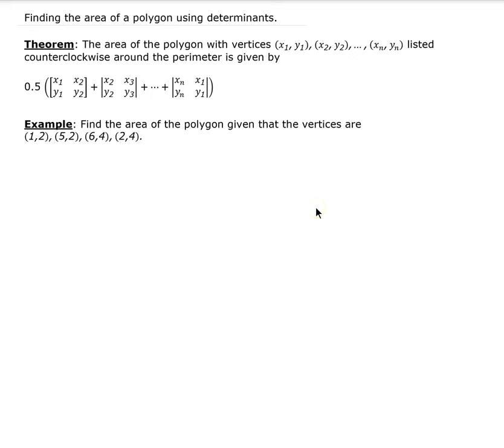In this lesson, we're going to talk about how to find the area of a polygon using determinants. Here's the theorem. If you have a polygon defined by a general set of vertices, and if you go counterclockwise around the perimeter of that polygon, then you can figure out the area by applying this formula.